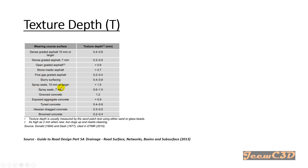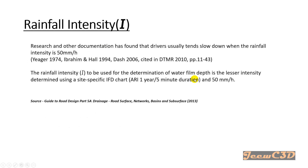The texture depth depends on the type of material used in the wearing course surface of the road. In this analysis we are using dense crater-pole 10mm or larger, for which the texture depth is 0.4 to 0.8.